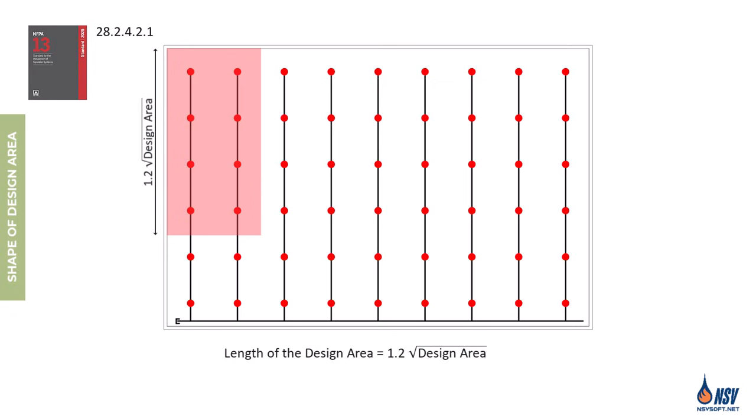NFPA 13 requires this because branch lines are typically smaller in diameter than cross mains, which leads to higher friction loss. This reduces the available water discharge along the branch line path, making it more vulnerable to fire spread. By extending the design area in this direction, we account for the worst-case hydraulic conditions and help ensure the system can control the fire effectively.